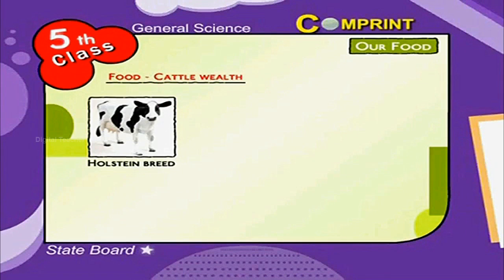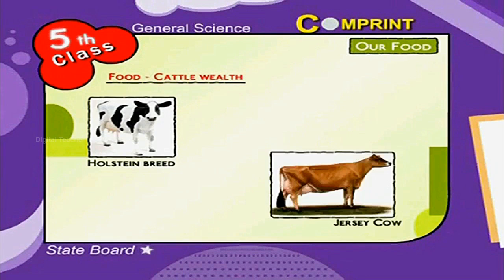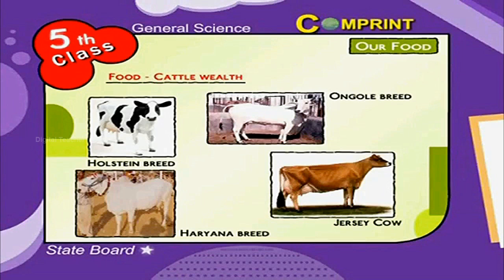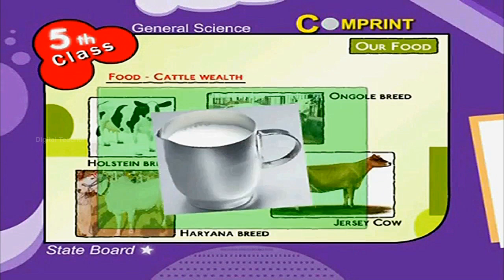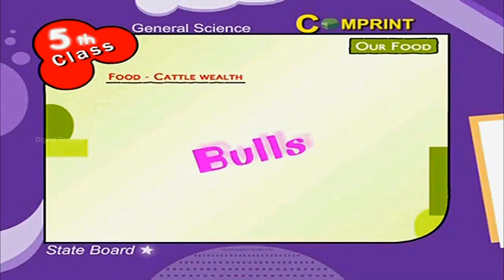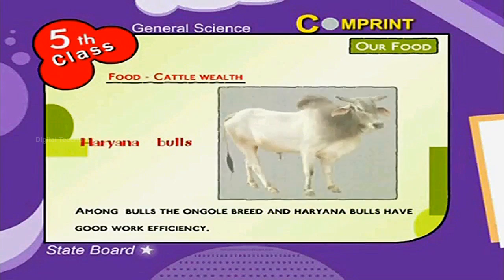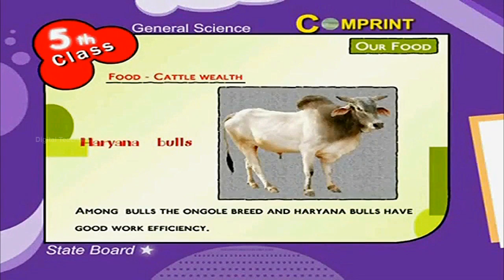Among cows, the Holstein breed, the Jersey cow, the Ongole breed and Haryana breed cows yield a lot of milk. Among bulls, the Ongole breed and Haryana bulls have good work efficiency.